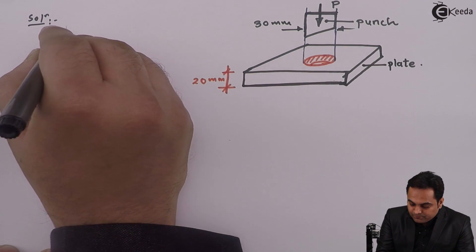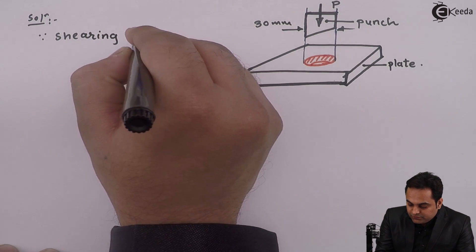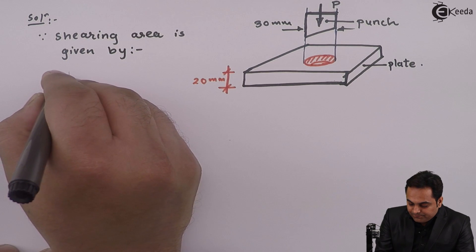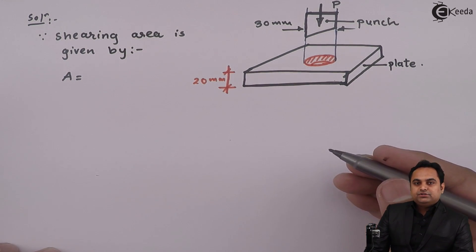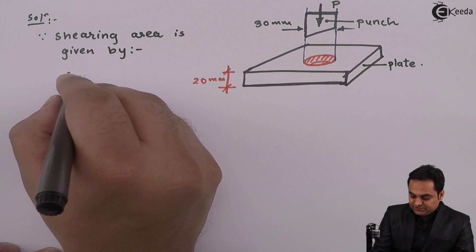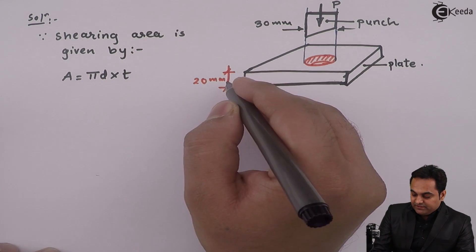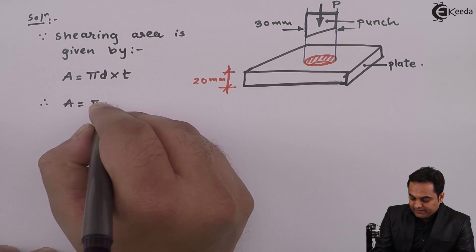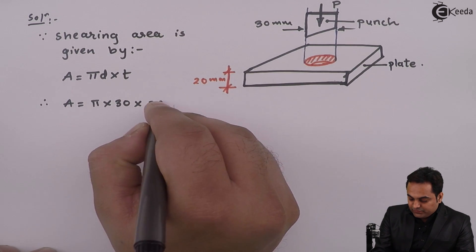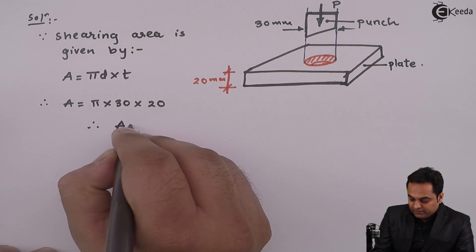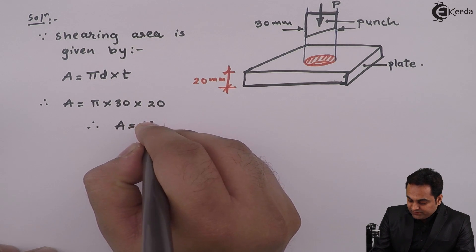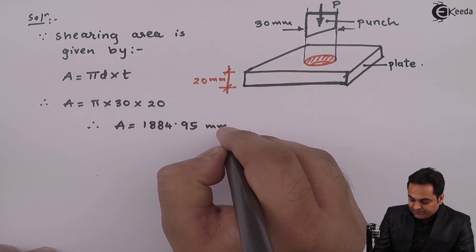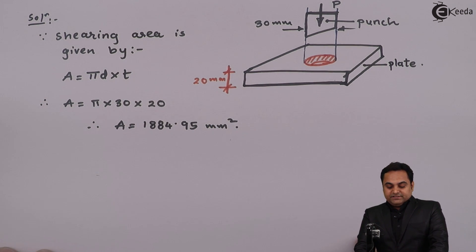The solution starts with calculating the shearing area. Shearing area A is given by pi times D (the circumference) multiplied by the thickness. Therefore, A = π × 30 × 20, which comes out to be 1884.95 mm square.